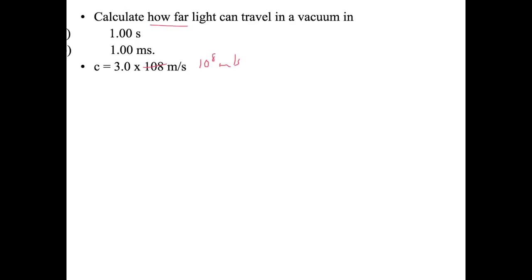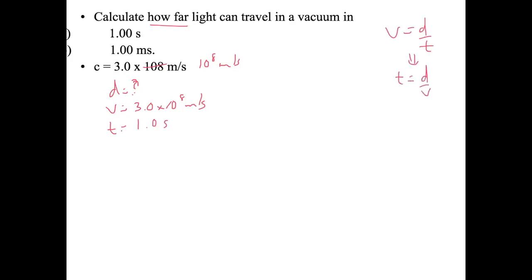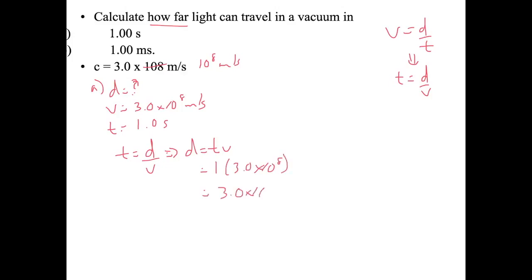We're looking for distance. We know velocity is 3.0 times 10 to the 8 meters per second. For part (a), time is 1.0 second. Using v equals d over t, rearranged to d equals t times v, we get d equals 1 times 3.0 times 10 to the 8, which is 3.0 times 10 to the 8 meters.